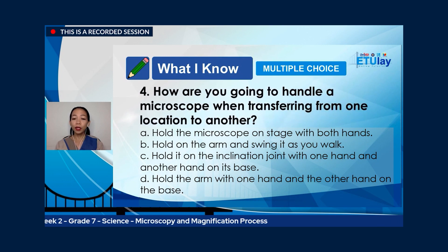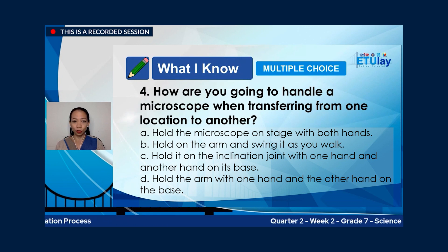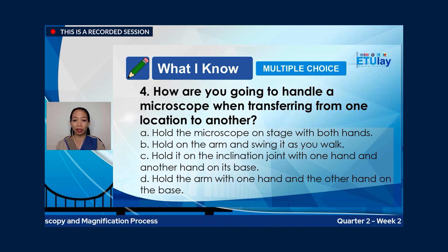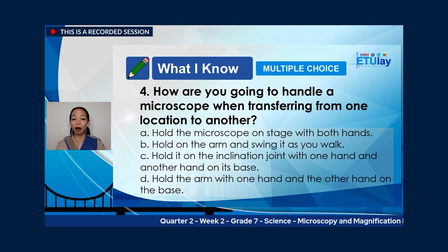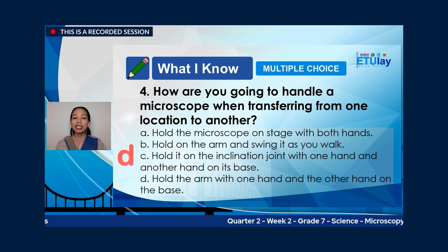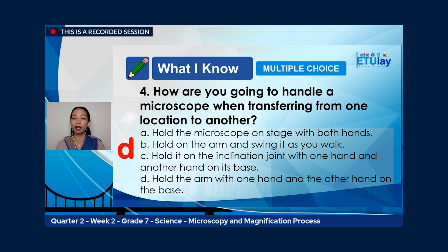Number four: how are you going to handle a microscope when transferring from one location to another? A. Hold the microscope on the stage with both hands. B. Hold on the arm and swing it as you walk. C. Hold it on the inclination joint with one hand and another hand on its base. Or D. Hold the arm with one hand and the other hand on the base. The correct answer is letter D: hold the arm with one hand and your other hand holding the base.